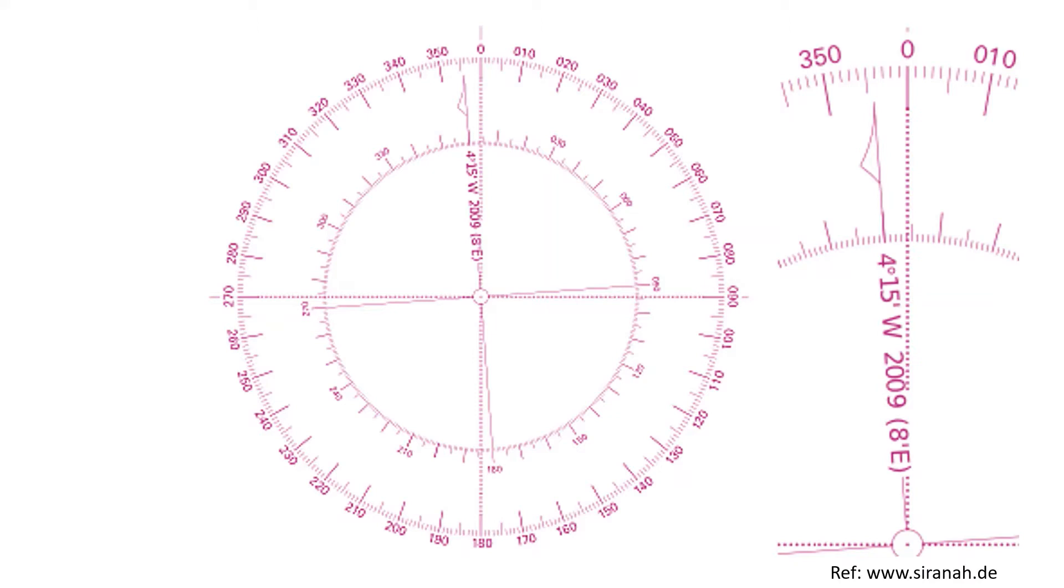How do you apply the correction? Let me just quickly show you. So here you can see the variation value is 4 degrees 15 minutes west and this was determined in 2009, and the annual change of correction is 8 minutes east.